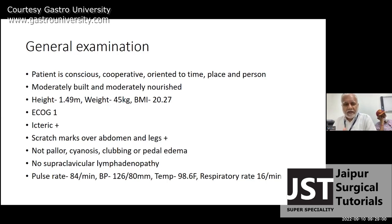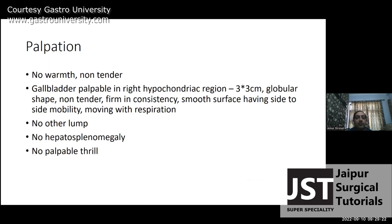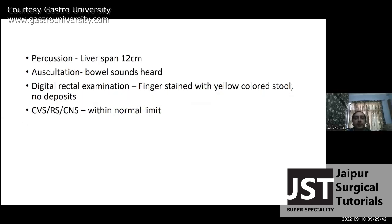Abdomen inspection: abdomen is flat, umbilicus central and inverted, all quadrants moving equally with respiration, no visible lump, peristalsis, or dilated veins. Hernial orifices free. Palpation: abdomen not tender. Gallbladder was palpable in the right hypochondriac region — 3 by 3 cm, globular shape, non-tender, smooth surface, side-to-side mobility, moving with respiration. No other lump palpable, no hepatosplenomegaly. Percussion: liver span 12 cm. Auscultation: bowel sounds normal. Digital rectal examination: finger was stained with yellow-colored stool, no deposits.